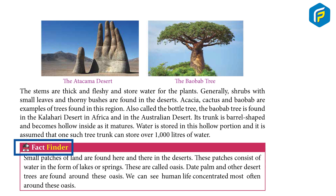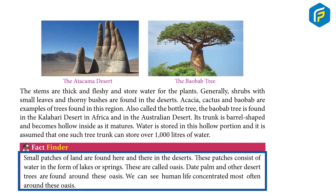Fact Finder: Small patches of land are found here and there in the deserts. These patches consist of water in the form of lakes or springs. These are called oases. Date palm and other desert trees are found around these oases. We can see human life concentrated most often around these oases.